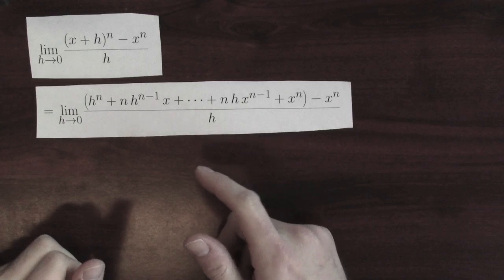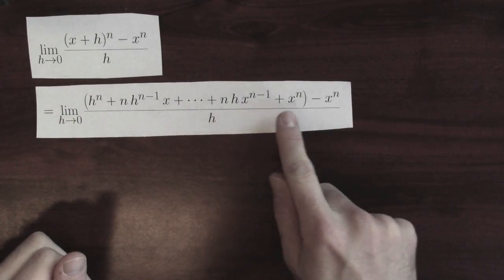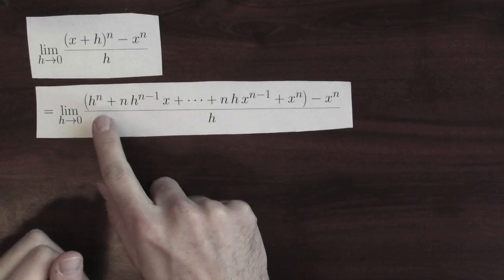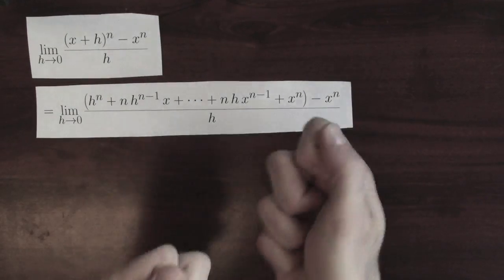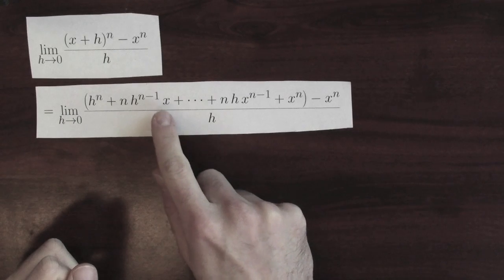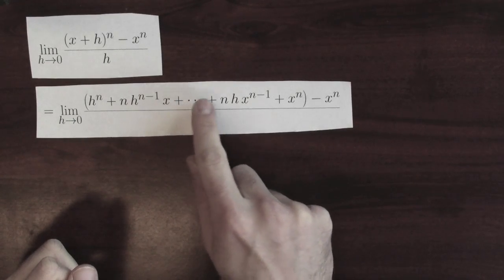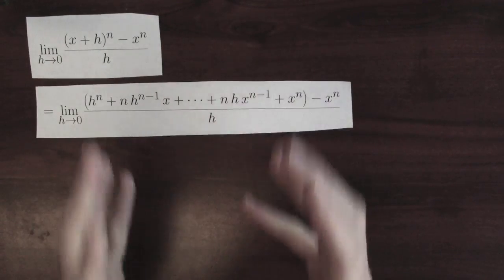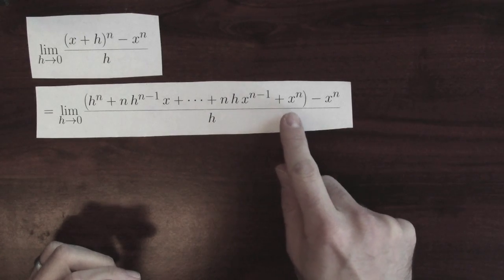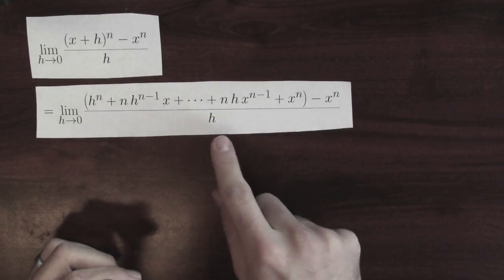To expand out x plus h to the n, I don't know exactly what n is. n is just some positive whole number. So I can't write down exactly what it is. But I can write down enough of it to get a sense of what's going on in the story: h to the n plus n h to the n minus 1 times x plus, and hidden in these dot dot dot is all kinds of other terms that have h's in them, plus n h x to the n minus 1 plus x to the n minus x to the n all over h.